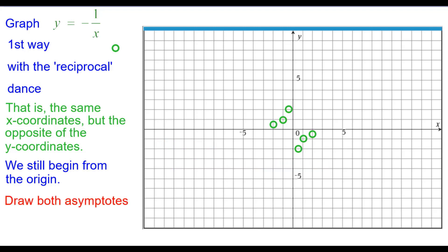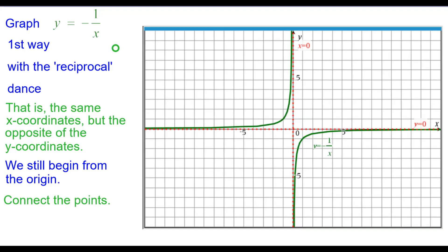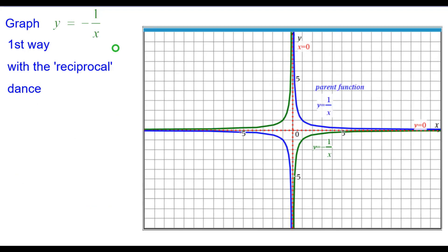Now that we have those points, let's go ahead and draw in both asymptotes — both the x-axis and the y-axis. Connecting the points, we get the two branches of a hyperbola. And comparing that to the parent function, which is in blue, you can see that yes, the graphs are reflections about the x-axis.